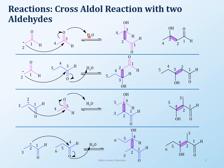I've given everything in one step here, but you would never write it this way when asked for the mechanism — it's a three-step mechanism, not a one-step process. Step one is making the enolate, step two is the addition, step three is protonation. I've shown it compactly here just to avoid spreading it over three slides.